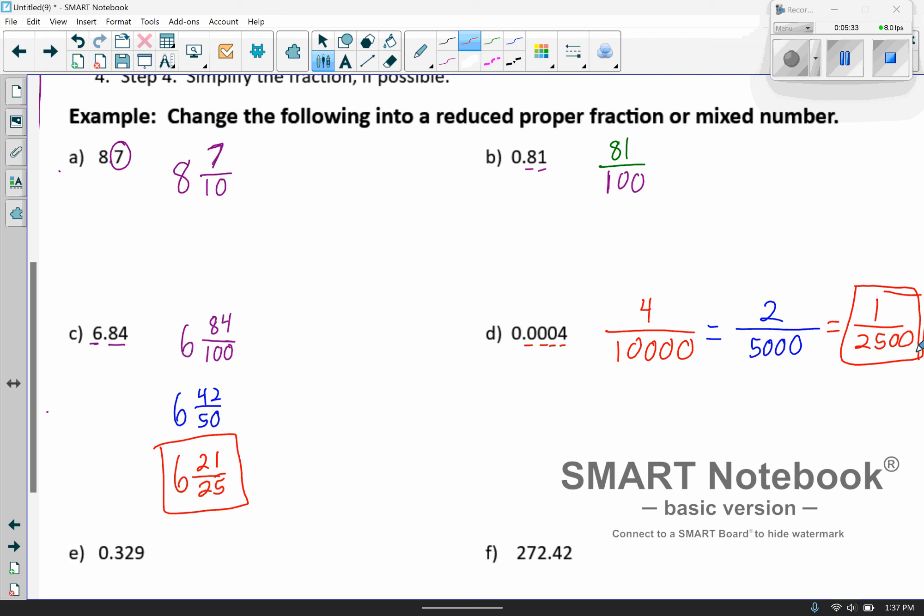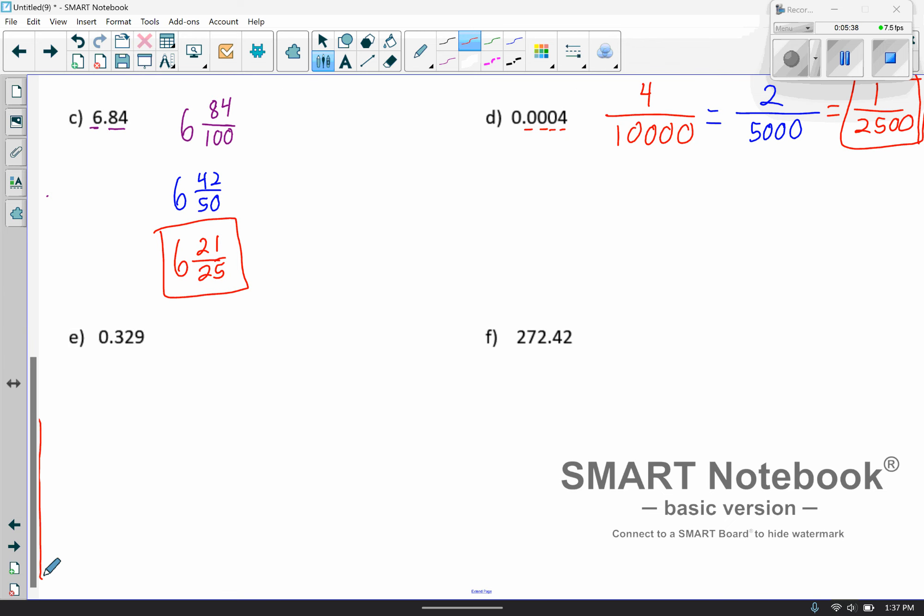All right, moving on down. Got two more for us here. And so E, let's see. So we're going to have 329 divided by 1, 1, 2, 3, 0. So 1,000. And so we could kind of play around with this and see if it reduces, but I do not believe it does. So you can play around with it if you want, but I believe that's where we're going to get stuck.